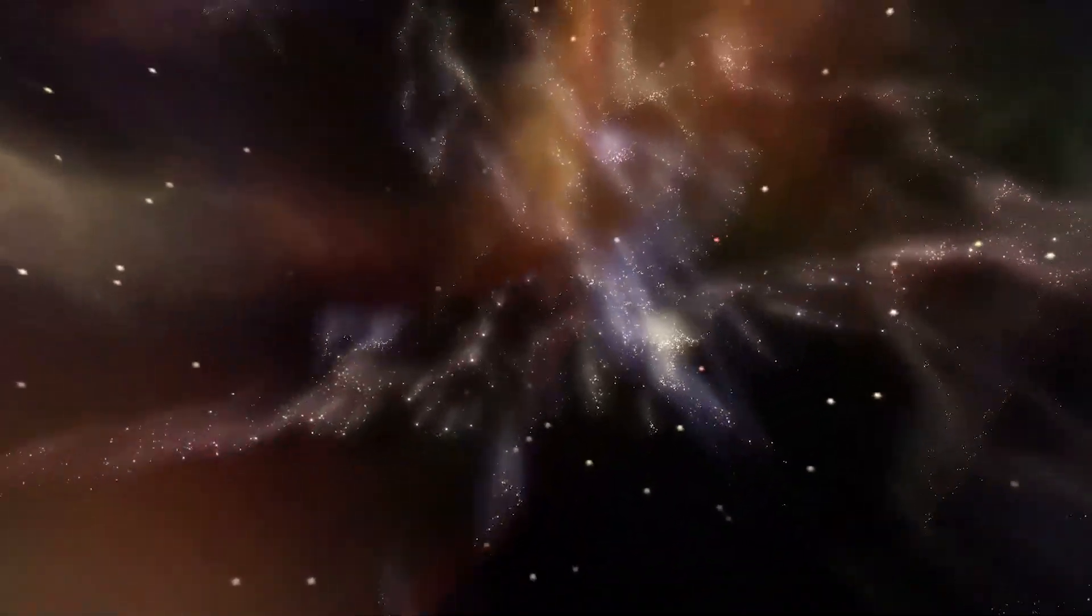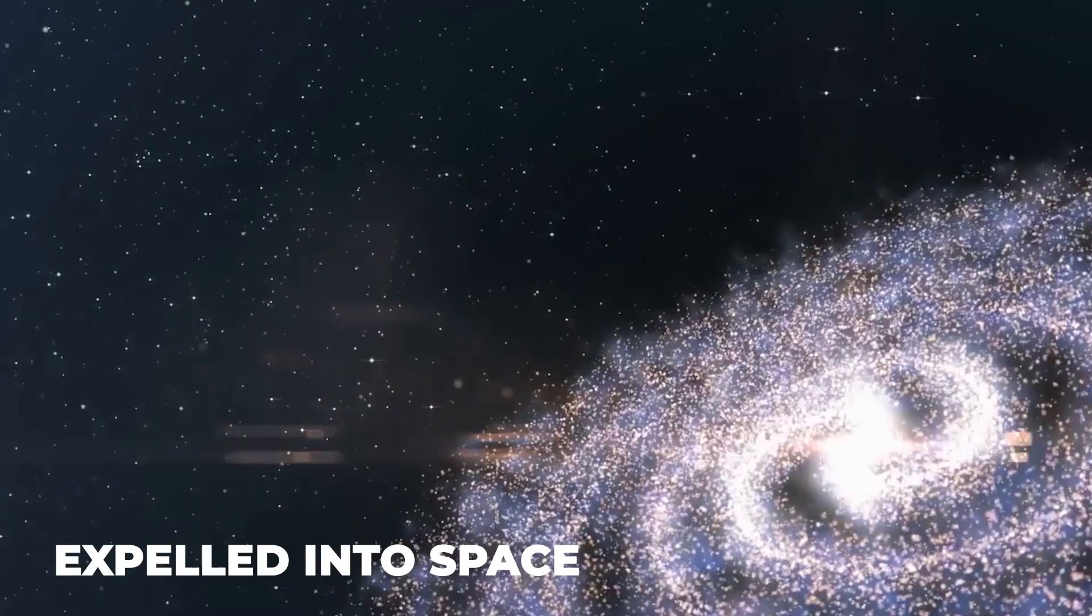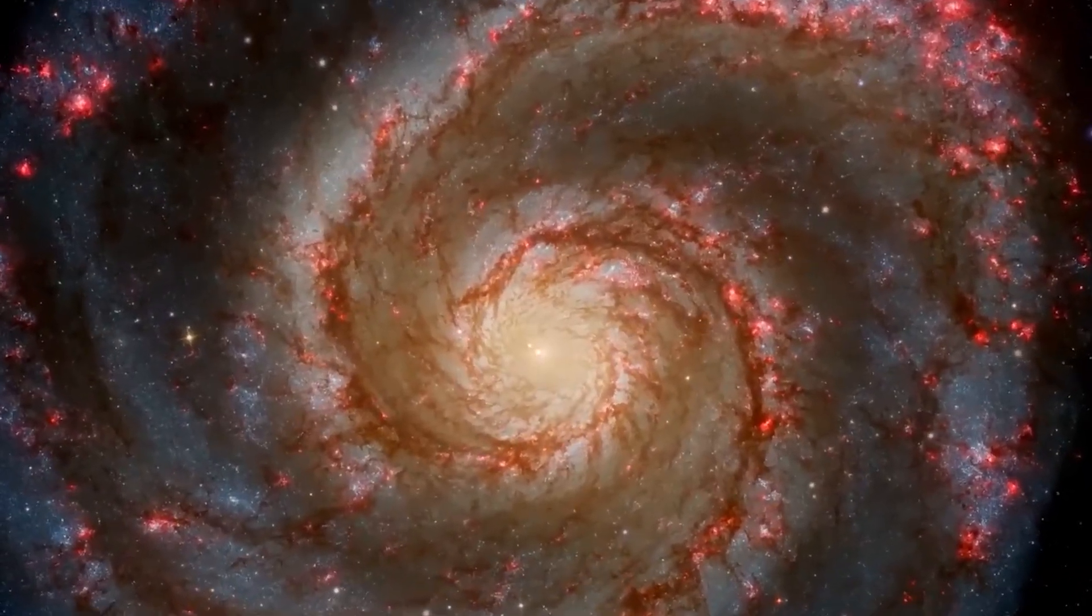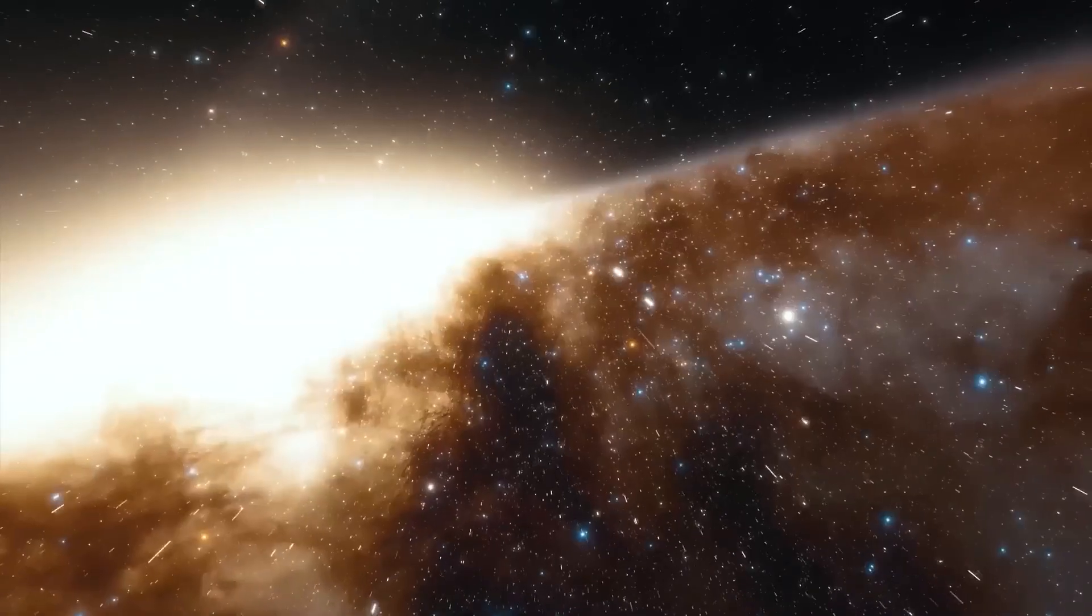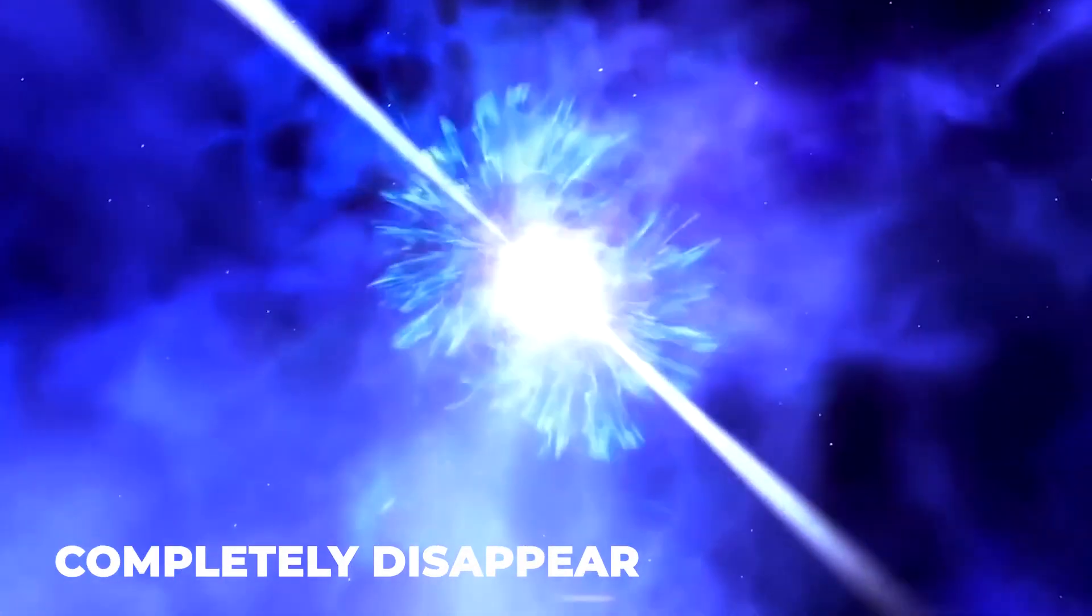The outer layers of a star are violently expelled into space during a supernova, which is a considerably larger and intrinsically brighter explosion, thus the word super. A supernova can cause a star to lose all of its brilliance and possibly completely disappear, leaving behind an expanding supernova remnant.